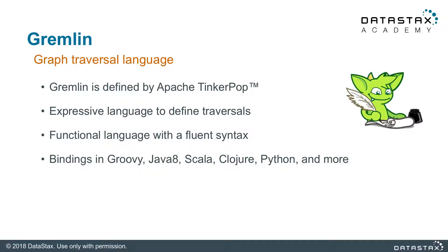Hi, I am Artem Chabatko, and this is Gremlin Language Introduction. Gremlin is a graph traversal language defined by the Apache TinkerPop project. It is the language we use in DataStax Enterprise Graph, but you will also find it in many other graph databases. Gremlin is a very expressive and functional language with a fluent syntax, which makes it easy to use and learn. It has bindings in many programming languages, and we will be using Gremlin Groovy for all our examples.